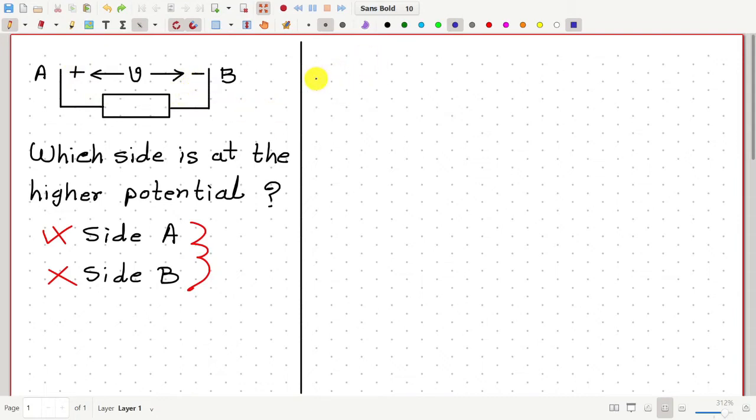It means the following. Potential of side A minus potential of side B is equal to V.